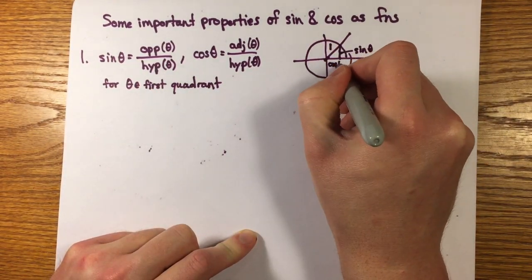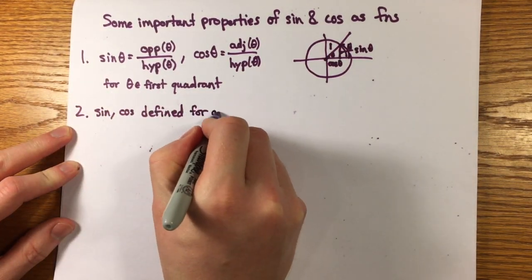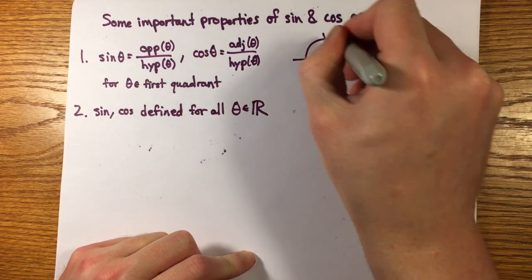Two, sine and cosine are defined for all real numbers. This is because you can wind around the circle as many times as you want in either direction. Three, sine and cosine have range minus 1, 1.